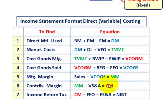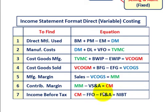For step seven, income before taxes: take the contribution margin we calculated and subtract the fixed factory overhead and any fixed selling and administrative expenses. That gives us our net income before taxes. This is our income statement format for direct or variable costing.